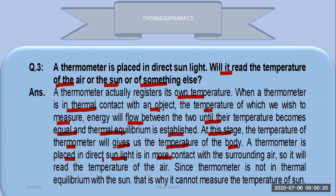The thermometer placed directly in the Sun is in more contact with the surrounding air, so it will reach the temperature of the air. Since the thermometer is not in thermal equilibrium with the Sun, it cannot measure the temperature of the Sun.